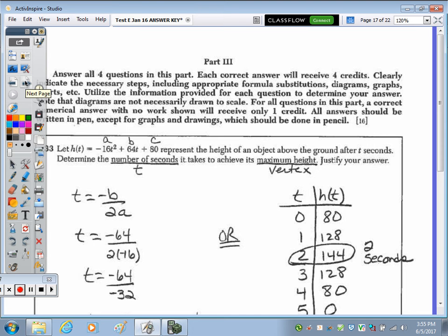Number 33. Now we're moving into part 3. So we have 4 questions in this part and each correct answer is going to receive 4 credits. Again, clearly indicate the necessary steps, formula substitutions, diagrams, charts, etc. And utilize the information for each question to help you answer it. And diagrams are not drawn to scale. For all questions in this part, a correct numerical answer with no work shown, again, is only 1 point. So you get 1 out of the 4. All answers should be written in pen except for your graphs and drawings, which should be done in pencil.